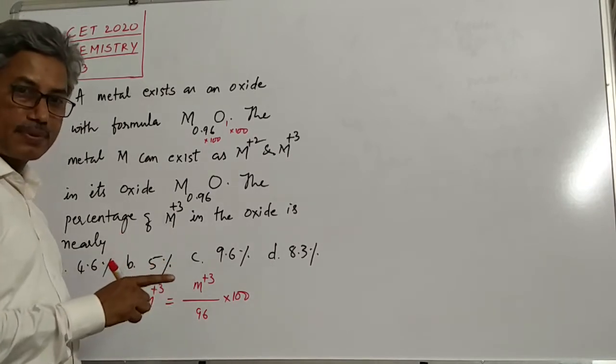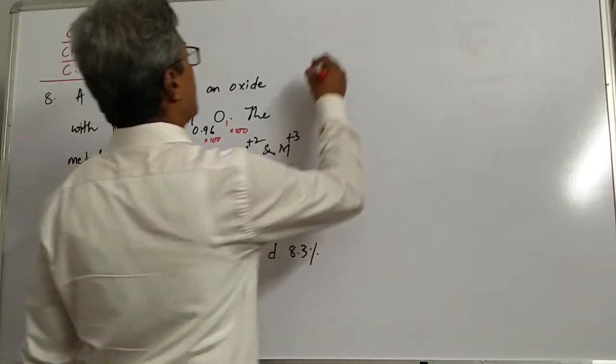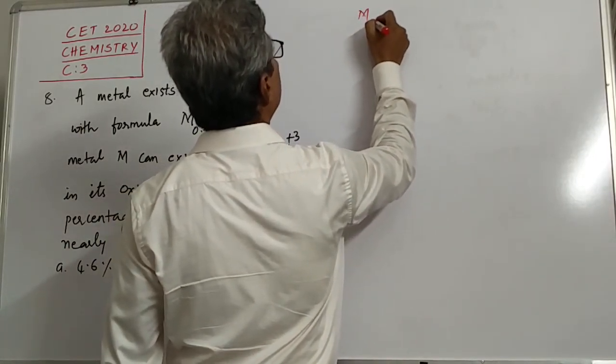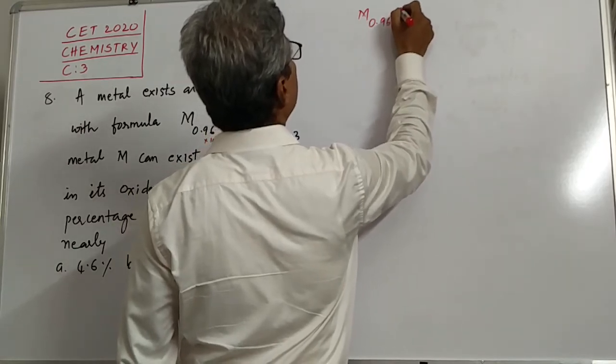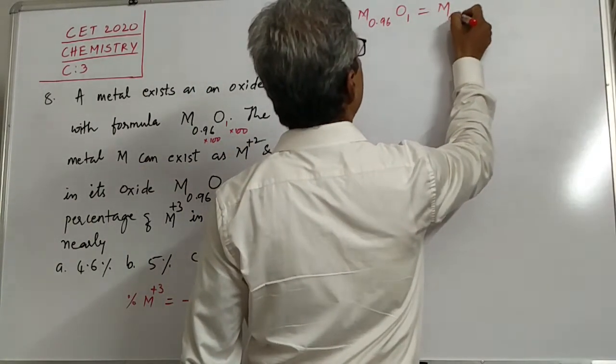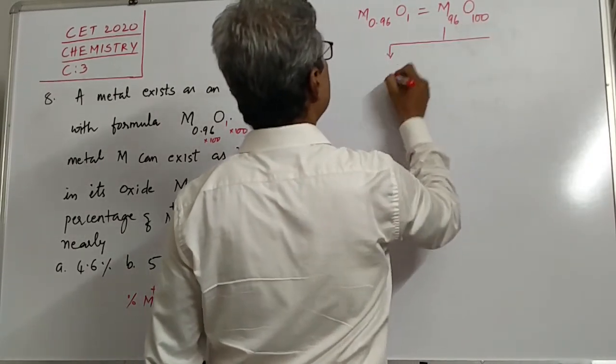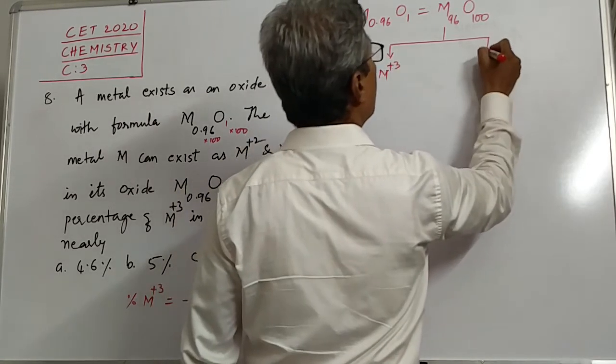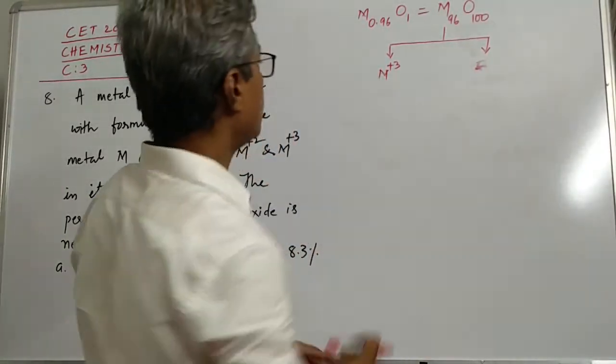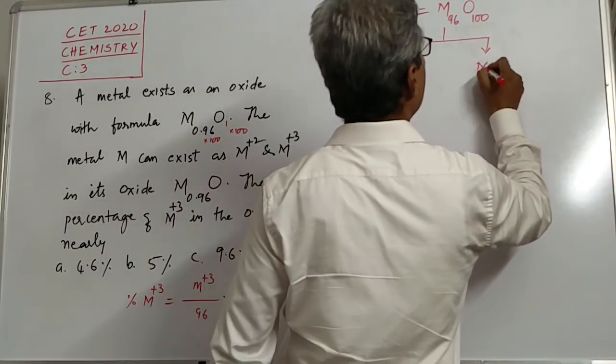So the prime condition, our step is to know how many M plus 3 are there. Therefore, students, we should use this, we should proceed like this. M0.96O1 can be written as M96O100. Alright, well, in this case, M exists as M plus 3 as well as M plus 2.